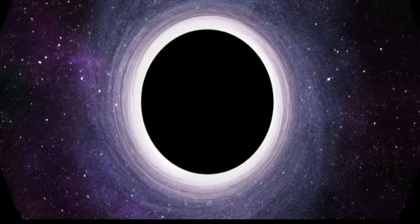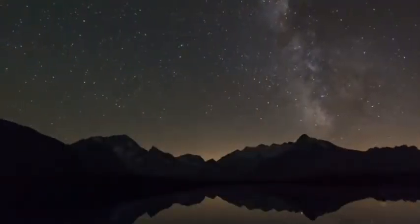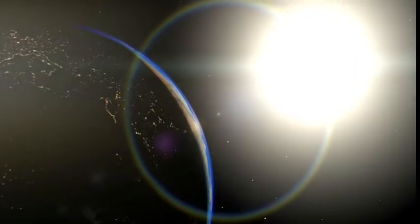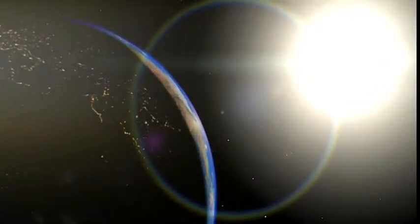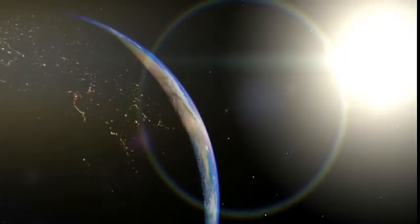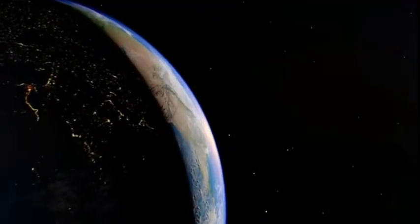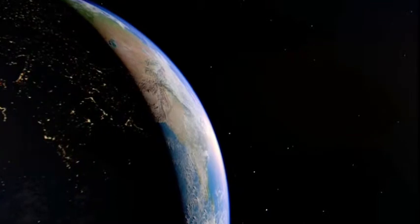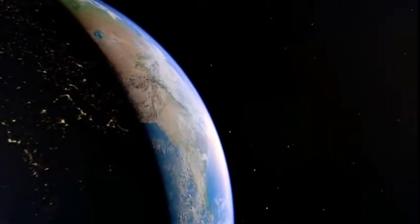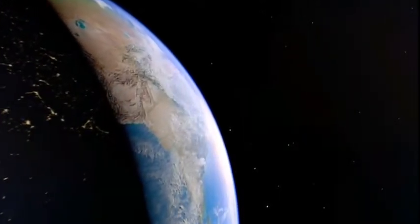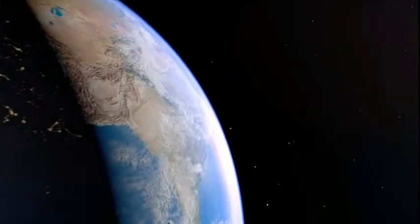Based on Kepler space mission data, there could be as many as 40 billion Earth-sized planets orbiting in the habitable zones of Sun-like stars and red dwarfs within the Milky Way. 11 billion of these estimated planets may be orbiting Sun-like stars. The nearest such planet may be 4.2 light-years away, according to a 2016 study. But still no sign of alien activity.